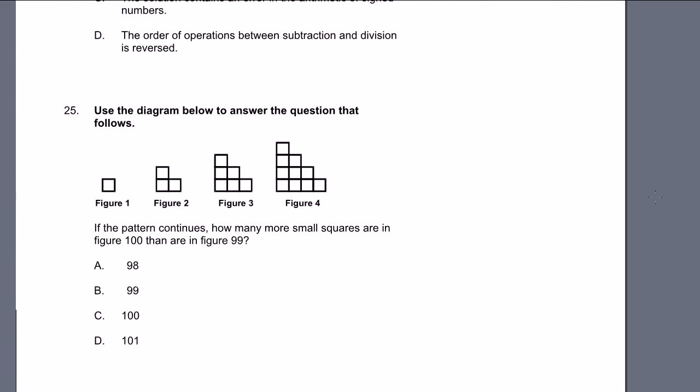Next problem, 25. Use the diagram below to answer the question that follows. Let's see, they're extending by 1 in each direction. They're kind of creating this triangle. If the pattern continues, how many more small squares are in figure 100 than are in figure 99? So let's think, every time we increment it, how many squares are we adding?